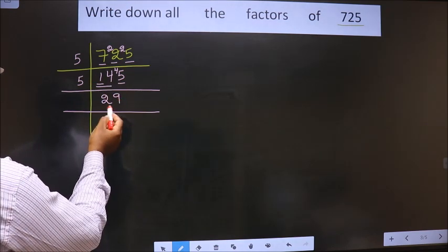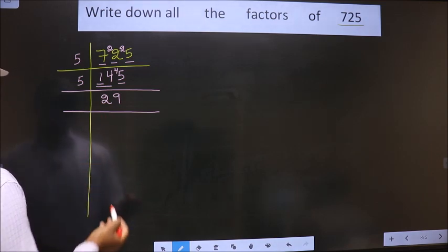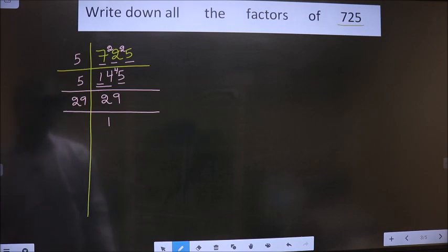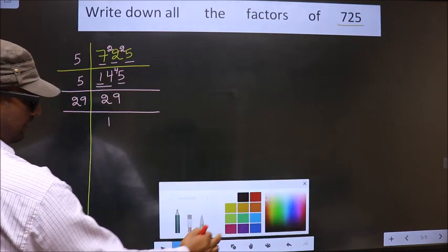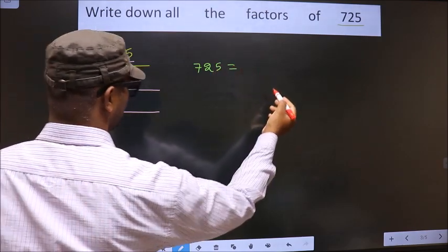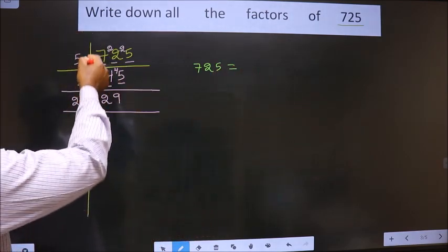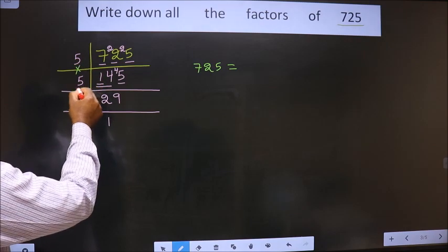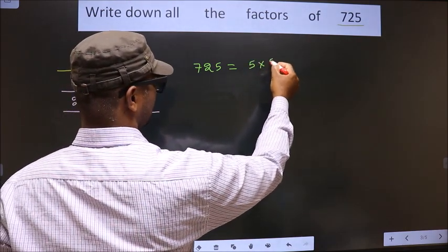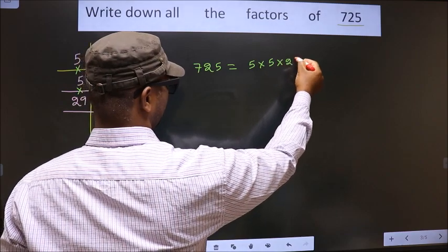Now we got 29. 29 is a prime number, so we take 29 once. So now, 725 is equal to the product of these numbers. That is 5 into 5 into 29.